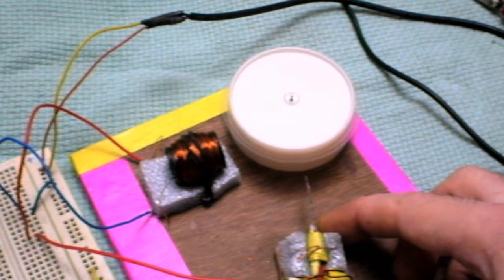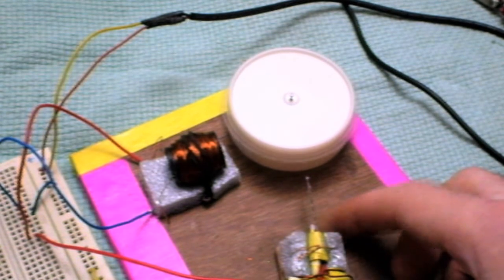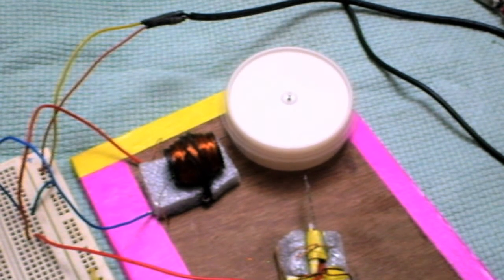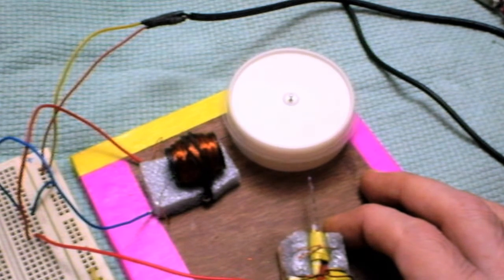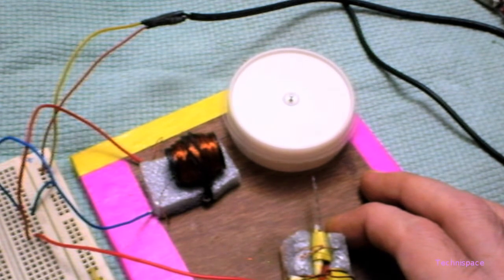As it collapses, a current is produced in the coil, sometimes called back EMF or electromotive force. This current is small and can be harnessed, stored, or utilized.